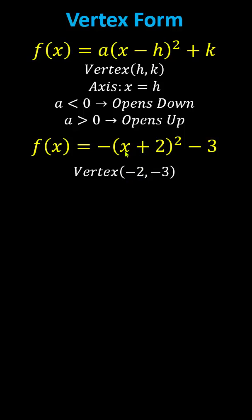Notice the negative two comes from the x plus two and the minus three comes from the minus three on the end. The axis of symmetry is x equals negative two.